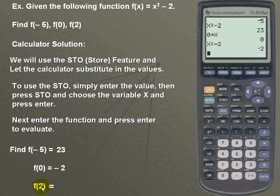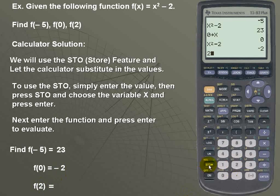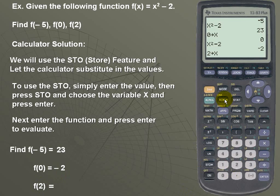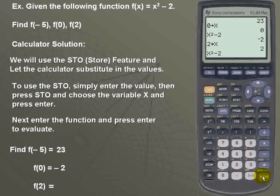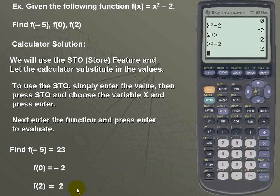And lastly, f of 2. I'll take the value of 2, store it for x, hit ENTER to lock it in, and then go back and put in my function, which is x squared minus 2, for a result of positive 2.